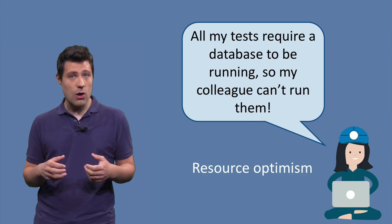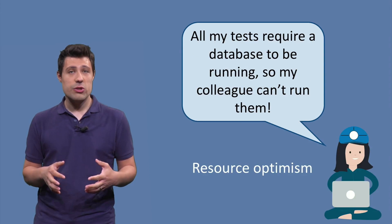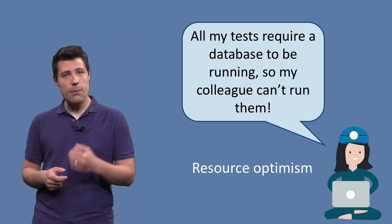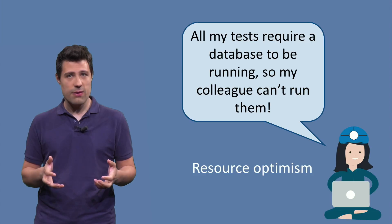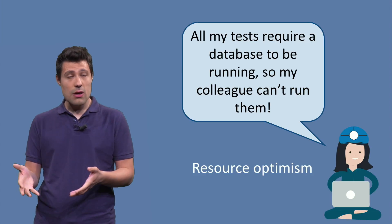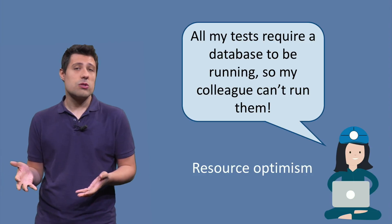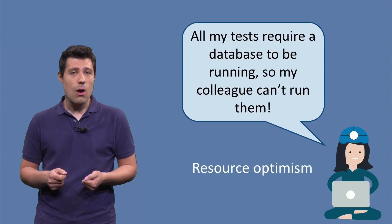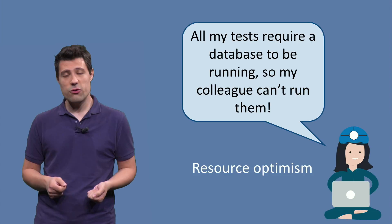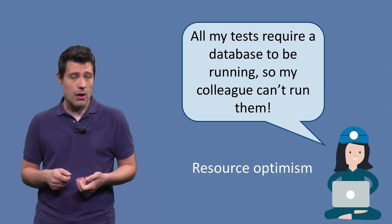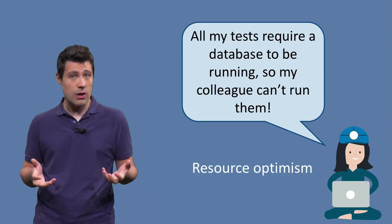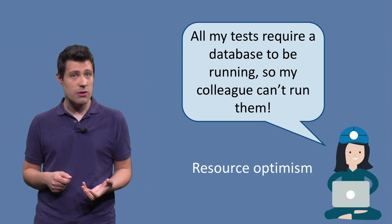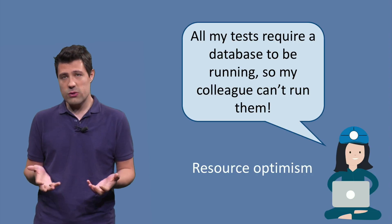Finally, the last smell in this video is what we call resource optimism — the belief that a resource is always available for your test. For example, your test depends on a database and you have it on your machine, but your colleague doesn't. So the test passes on your machine but not on your colleague's machine. Or you may believe a resource is 100% available all the time — web services are sometimes not working, and if a test runs while the web service is out of service, the test will probably fail.